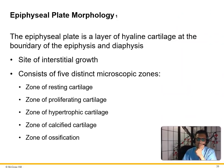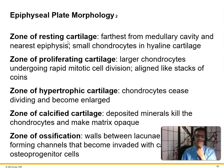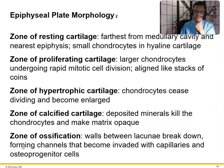Epiphyseal plate morphology: the epiphyseal plate is a layer of hyaline cartilage at the boundary of the epiphysis and diaphysis — the site of interstitial growth. There are five distinct zones: zone of resting cartilage — small chondrocytes nearest the epiphysis; zone of proliferating cartilage — larger chondrocytes undergoing rapid mitosis, aligned like stacks of coins; zone of hypertrophic cartilage — chondrocytes cease dividing and become enlarged; zone of calcified cartilage — minerals deposited, killing chondrocytes; and zone of ossification — channels form, invaded by capillaries and osteoprogenitor stem cells.